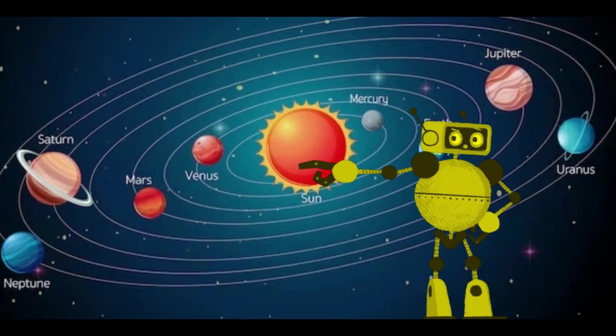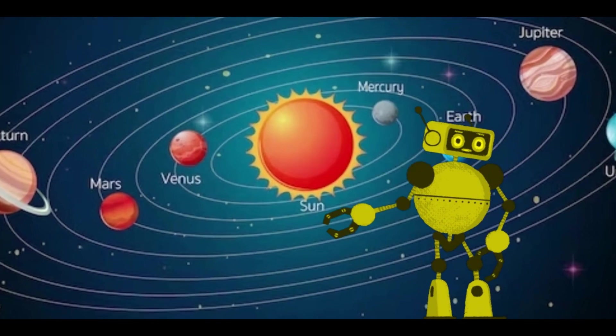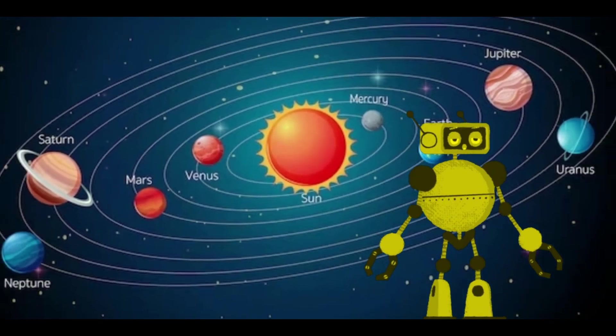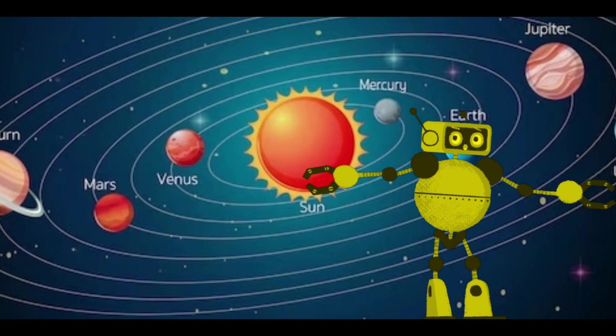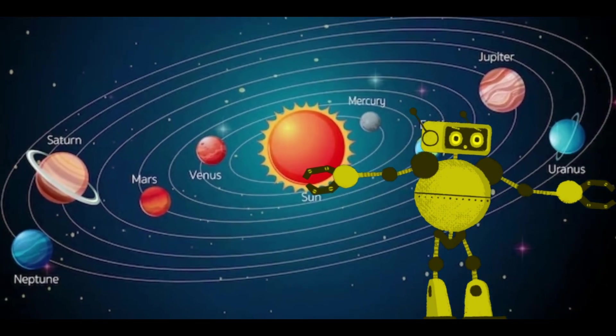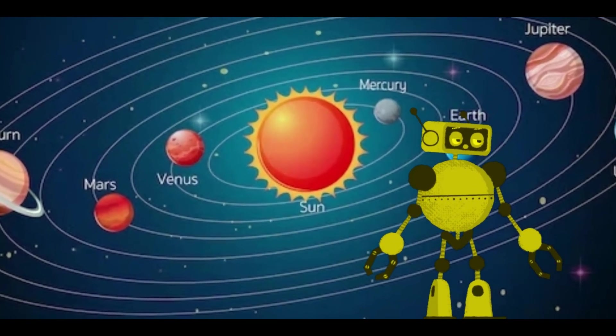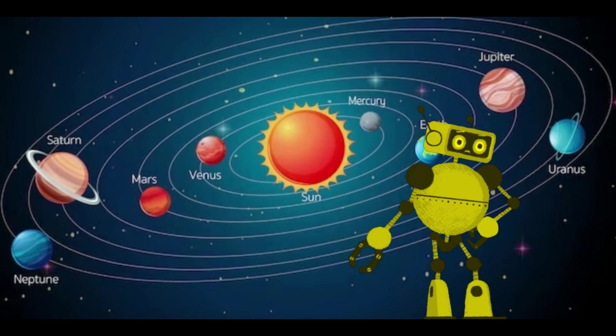Moving inward from the Sun, we encounter the four rocky planets known as the inner planets. Mercury, the closest to the Sun, is a scorching hot world, while Venus has a thick atmosphere trapping heat, making it the hottest planet.